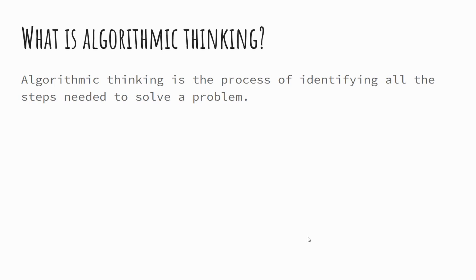And then algorithmic thinking — the final point — is relatively straightforward. This is the idea that you're able to process and identify all of the steps needed to solve a problem. This might involve taking that larger problem, decomposing it, and breaking it down into individual steps of a sequence that can then be followed in order to solve the problem.